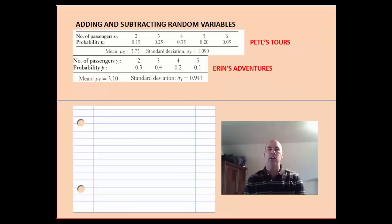Okay, next up we're going to take a look at an example where we want to add two random variables together. Here we have information about two tour groups, Pete's Tours, where every day he takes passengers out on his tour. And you can see the number of passengers there, and the probability that we have that many passengers. Some days we might have two passengers, some days we might have as many as six. And Erin's Adventures, same deal. She has between two and five passengers every day, and we're giving her probability. And we're also giving the mean and the standard deviation, which you could have done in the last section using the rules for random variables and probability distributions.